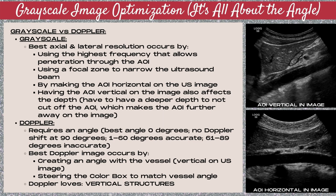Doppler loves vertical structures. How can you tell if a structure is horizontal or vertical on the image? Looking at the two images on the right: in the top image, the area of interest — the aorta, the long anechoic tube — is vertical, because one end is lower in the image than the other. In the bottom image, the aorta is horizontal — the entire length is at the same depth across the image. This is a horizontal structure.